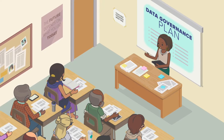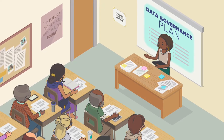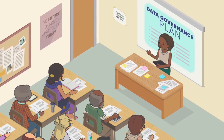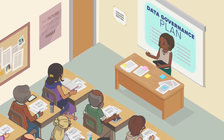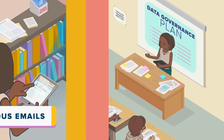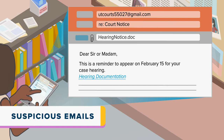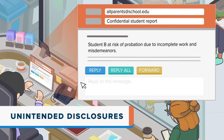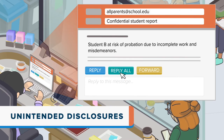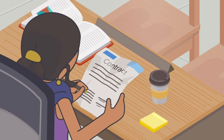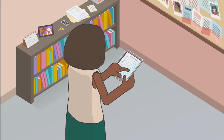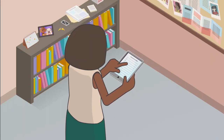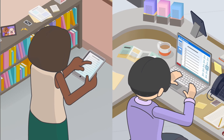You can implement a data governance plan, train staff on the latest privacy issues and practices — such as how to handle suspicious-looking emails or avoid unintended disclosures — and include privacy provisions in your contracts. You can also create checklists with questions that teachers and administrators should ask before bringing new technology into schools.